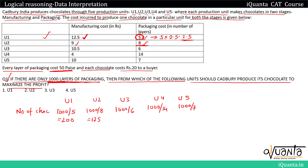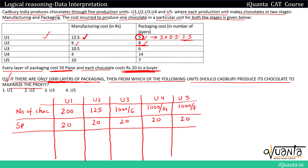Since we are looking for maximum profit, we need SP and CP. The SP for all units is 20 rupees. The CP is the sum of manufacturing cost and packaging cost. For U1: 12.5 + (5 × 0.5) = 15 rupees per chocolate. For U2: 9 + (8 × 0.5) = 13 rupees per chocolate.